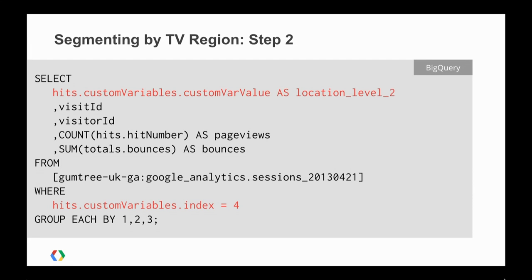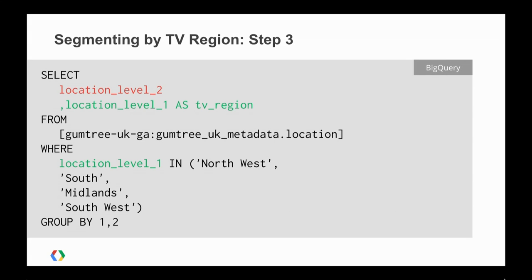Once we've done that, we need to query our analytics data. We're using a custom variable called location level 2, because that's the level we want to look at. We're pulling out the session data and a little bit of aggregation relating to page views and bounces — metrics we can sum up and aggregate at this stage. The next step is to aggregate our lookup table so that we're only pulling out the data we need: location level 2, and also location level 1, which is our TV regions. We've also applied a filter so we're only getting back the data we're really interested in.